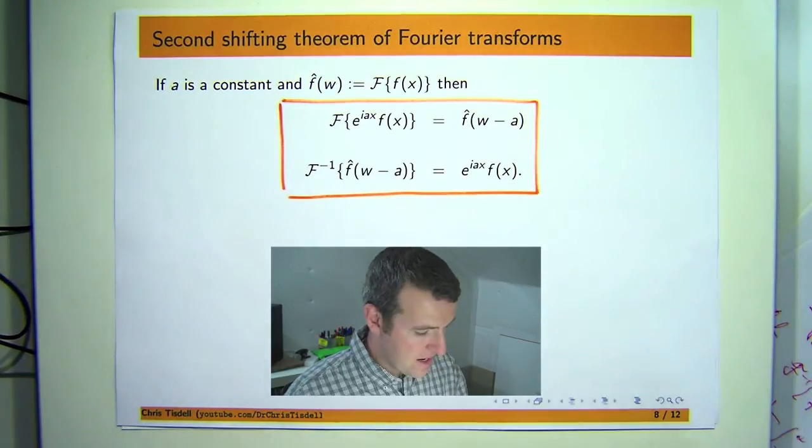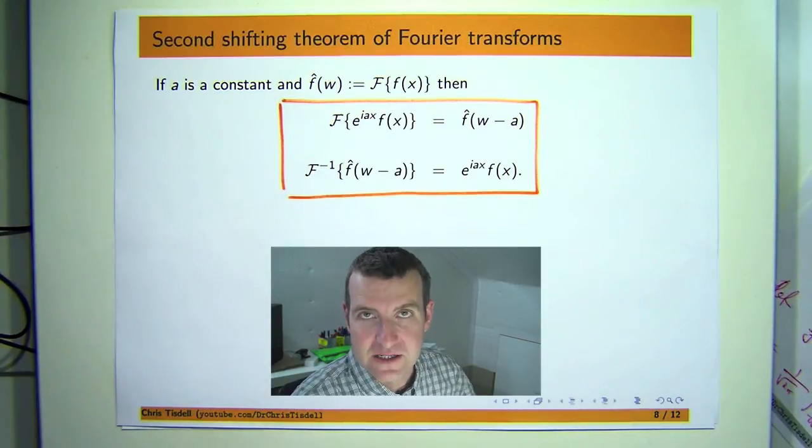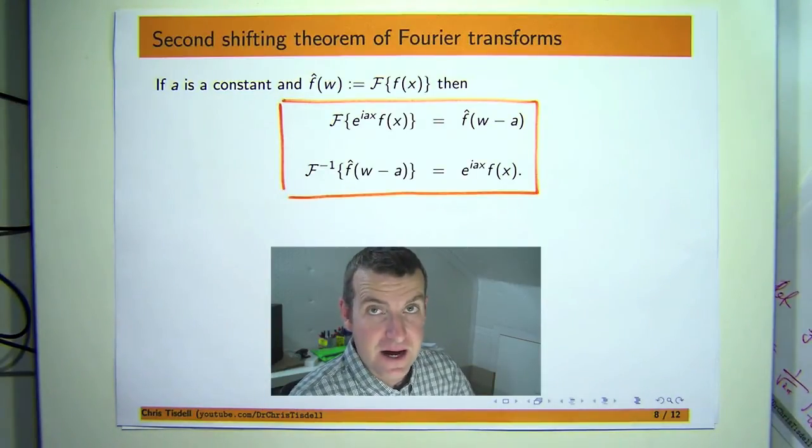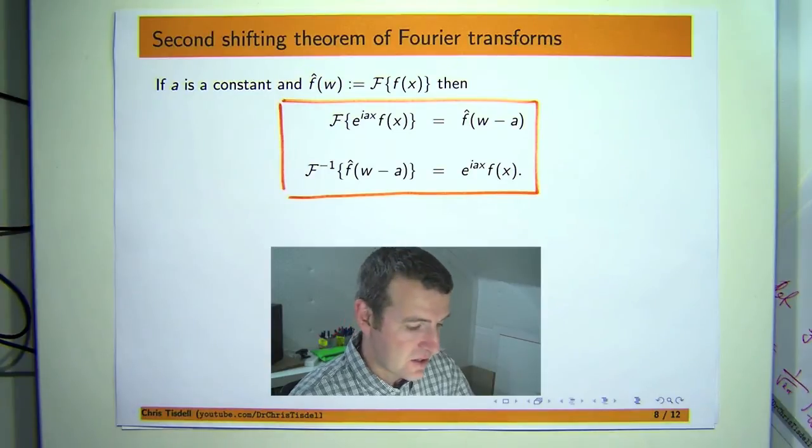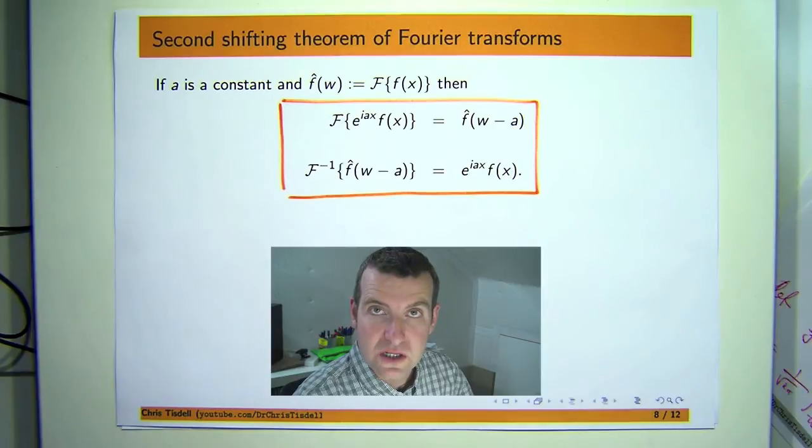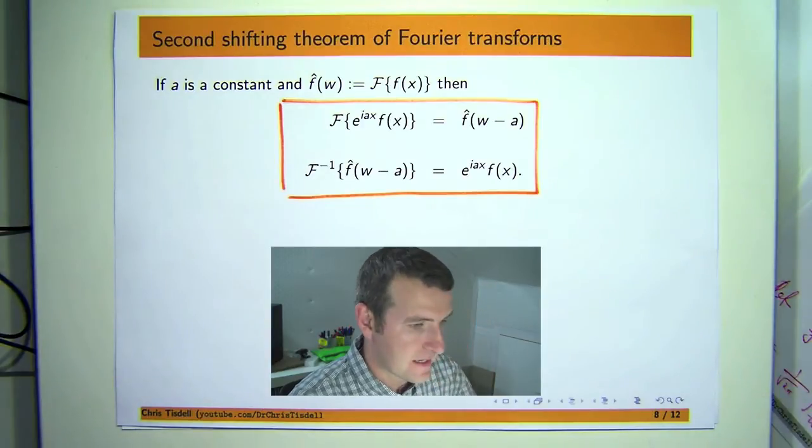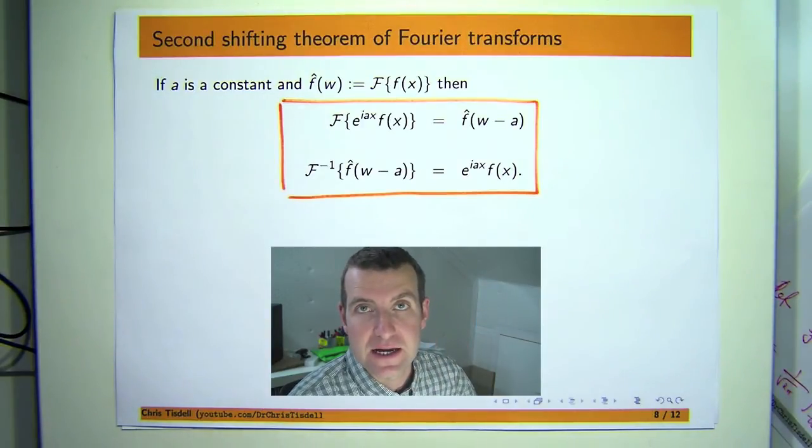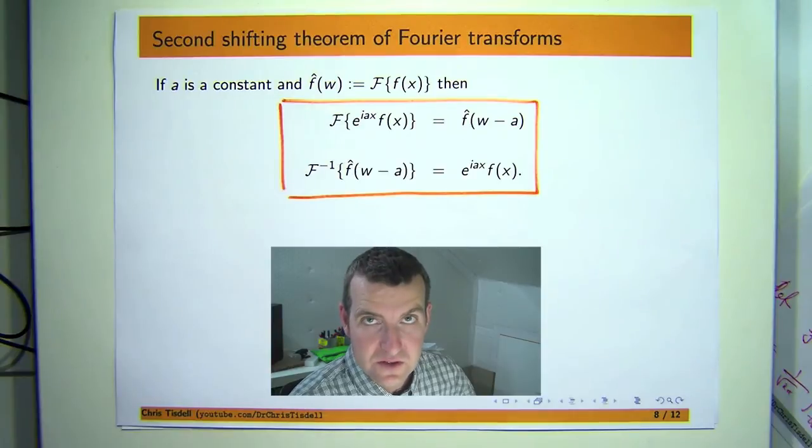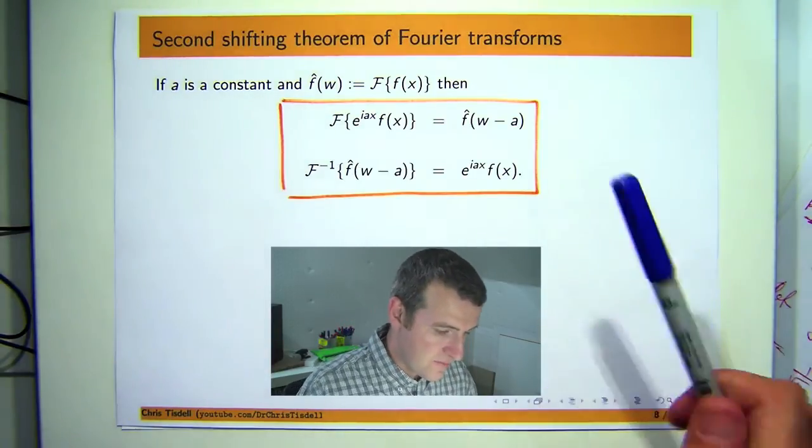Now remember Fourier transforms are important for solving differential equations, especially partial differential equations. So the significance of this result is linked back to the solution method to partial differential equations. So this result is important because it can be applied, at least in theory, when you're solving partial differential equations. So let's do a proof.